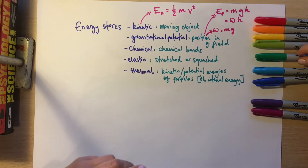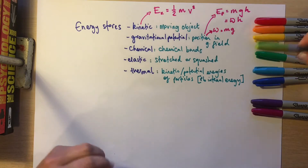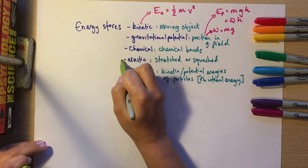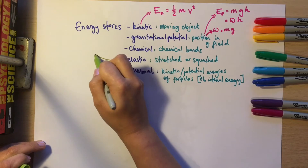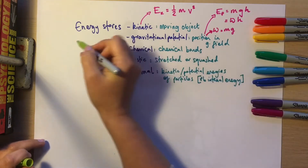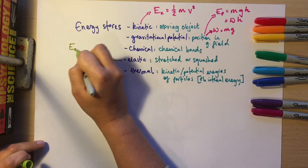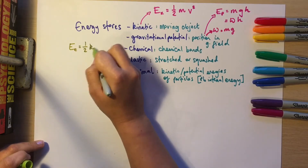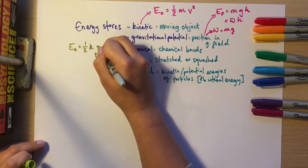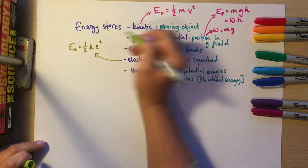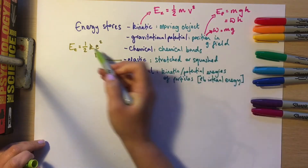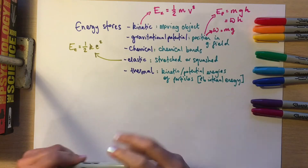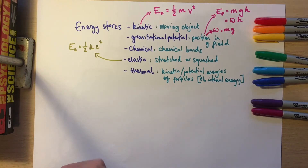The elastic potential energy equation is one you get given — you don't need to know it off by heart. Elastic potential energy equals one half times the spring constant times the extension squared. You don't need to learn it off by heart, but you do need to be able to use it and to rearrange it.